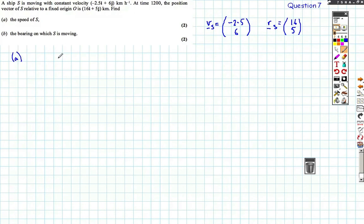Okay, part A, the speed of S. Well, that's quite straightforward. The speed bit is usually not a problem. So we're just looking at the velocity vector. It says to the left 2.5 and up 6. Let's just get a little sketch of this. If I started here, I'd go left 2.5 and up 6, just roughly not to scale.